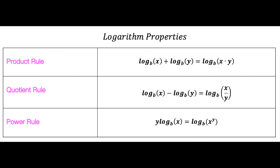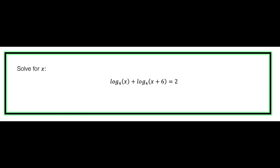So if these rules are a little overwhelming and don't make sense, don't worry, because we're going to look at this step by step. So now let's look at our first question: we have log base four of x plus log base four of x plus six equals two, and we need to find x.